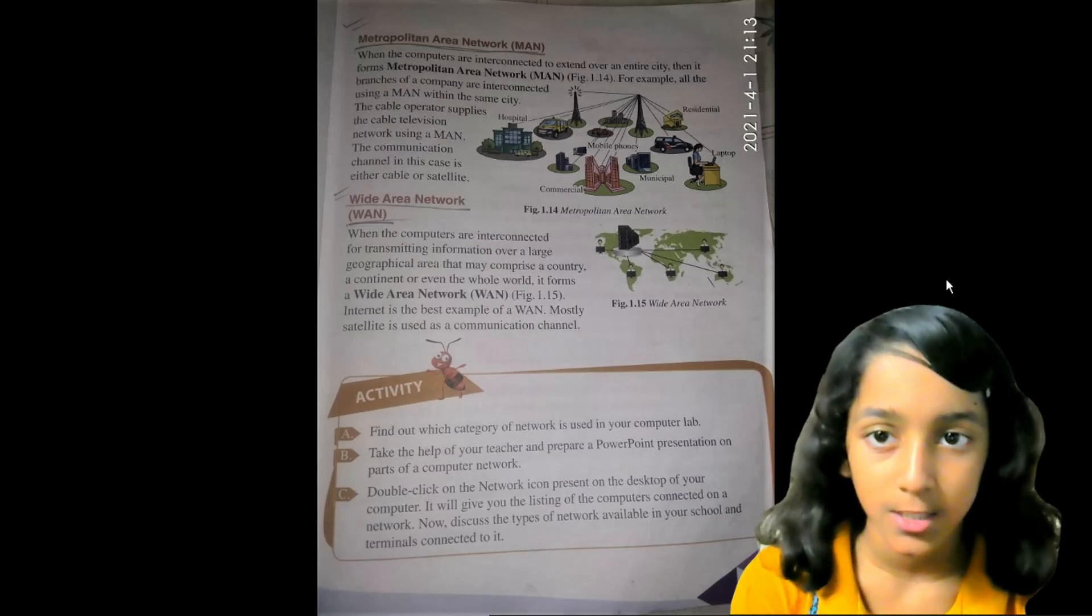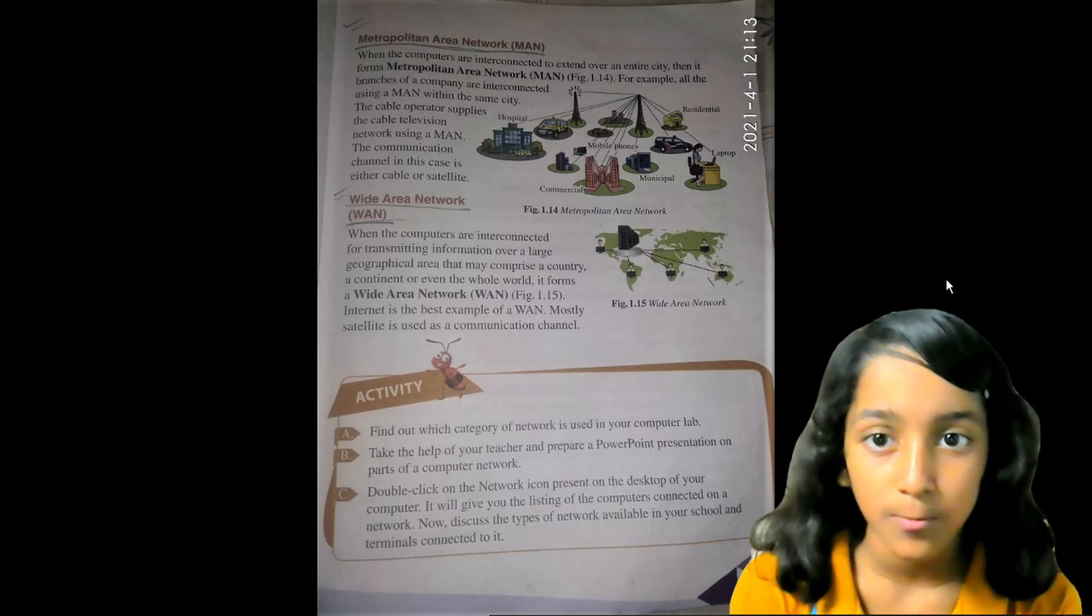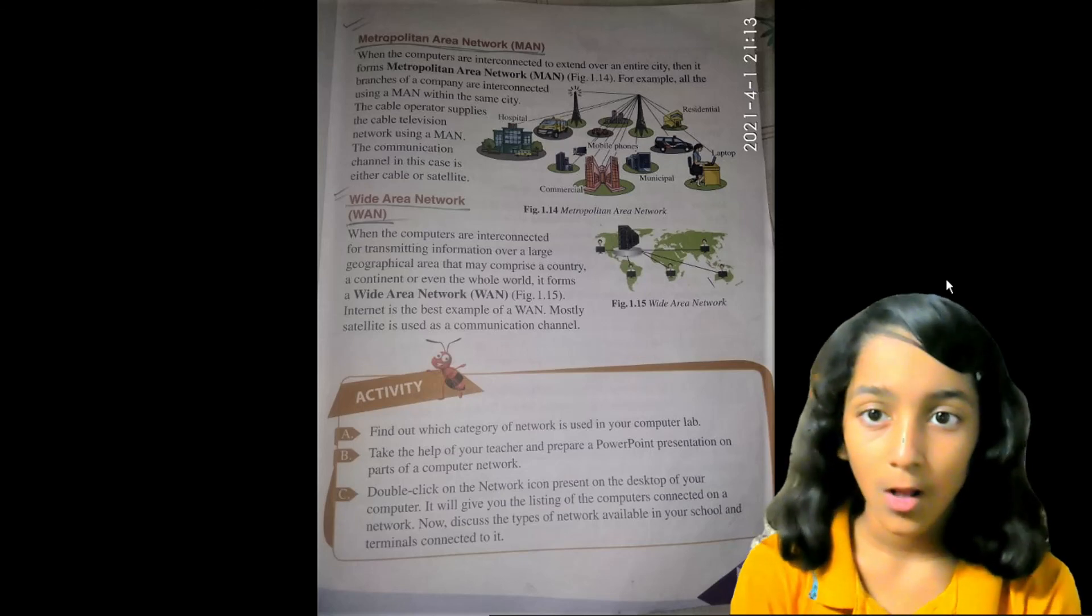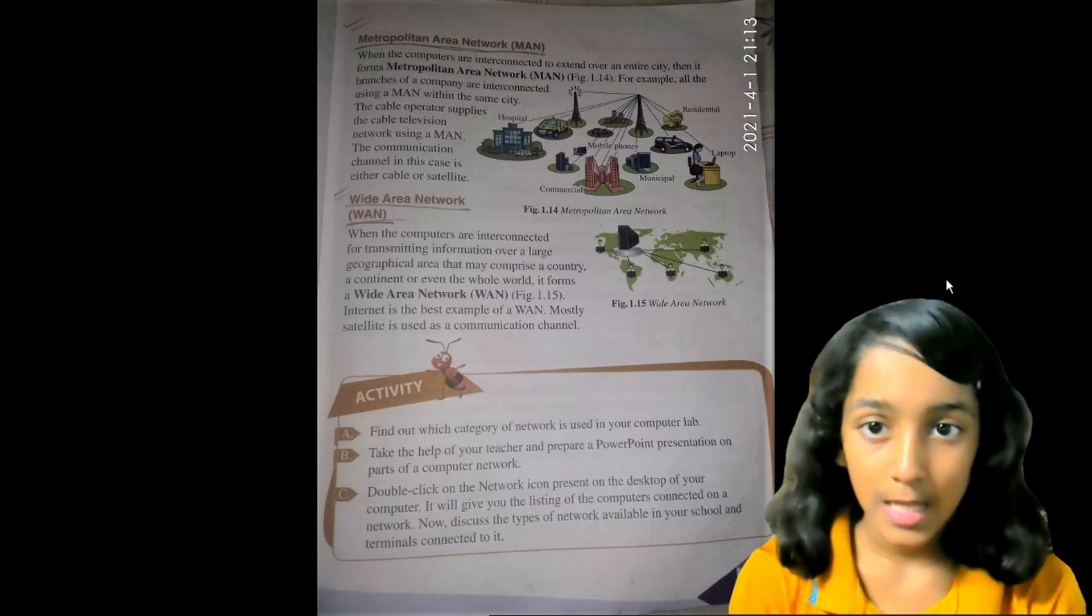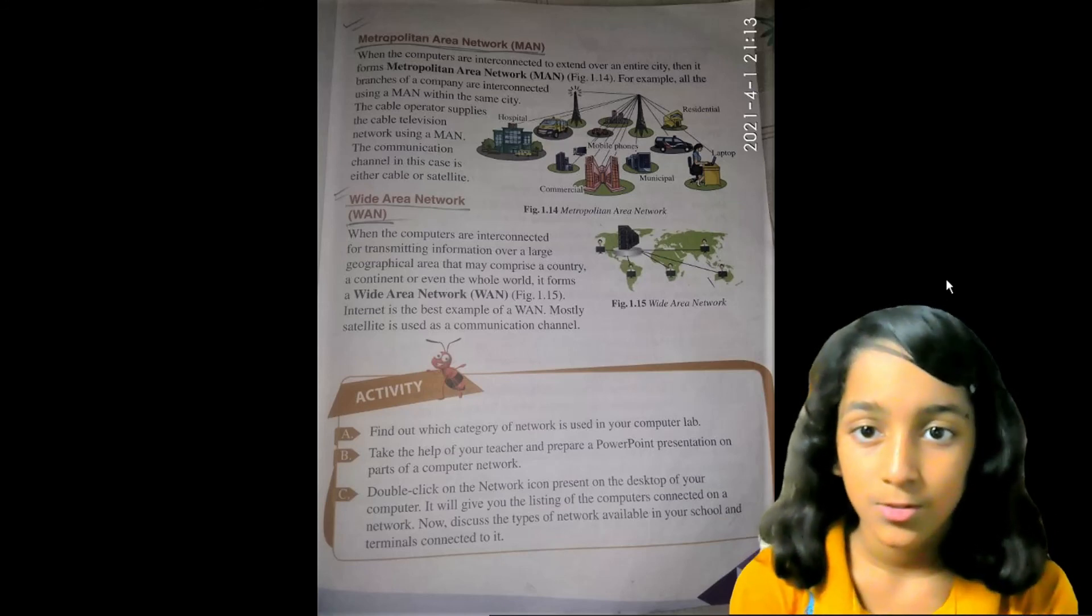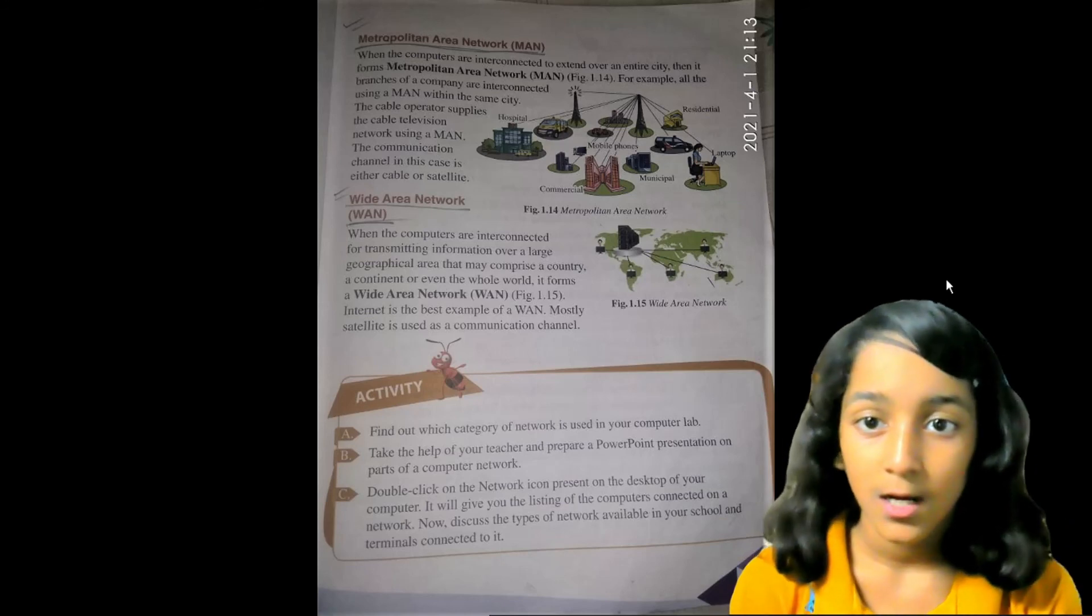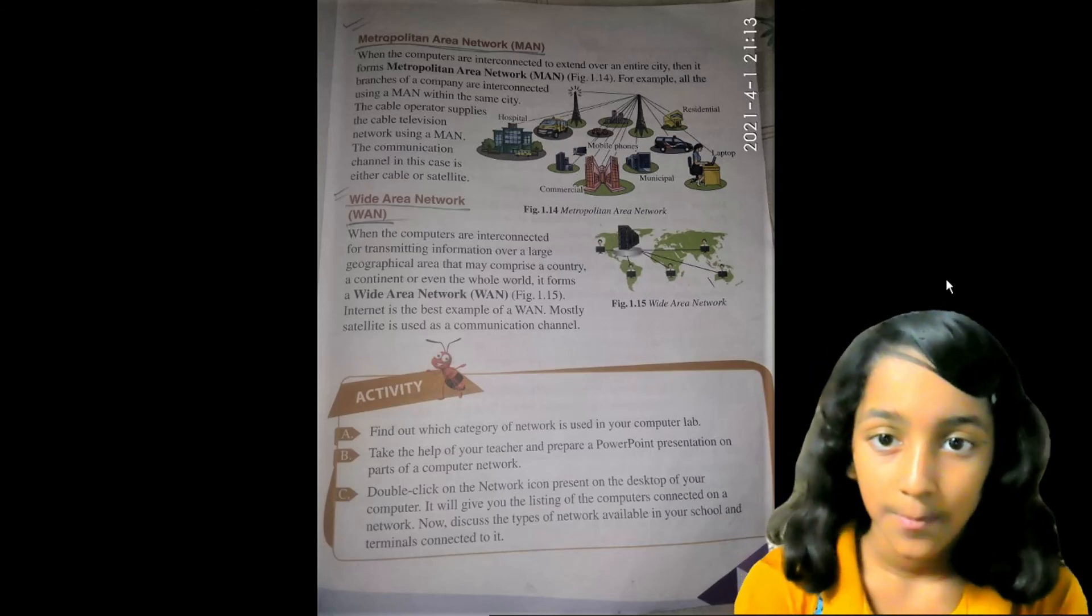Metropolitan Area Network: When the computers are interconnected to extend over the entire city, then it forms a metropolitan area network. For example, all the branches of a company are interconnected using MAN within the same city. The cable operator supplies the cable television network using MAN. The communication channel in this case is either cable or satellite.